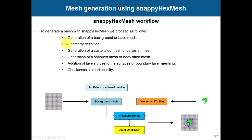To generate a mesh with snappyHexMesh, we proceed as follows. The first step is generating a background mesh or base mesh, which can be generated using blockMesh or an external mesher. You also need the geometry definition in STL format - it can be one or multiple geometries.